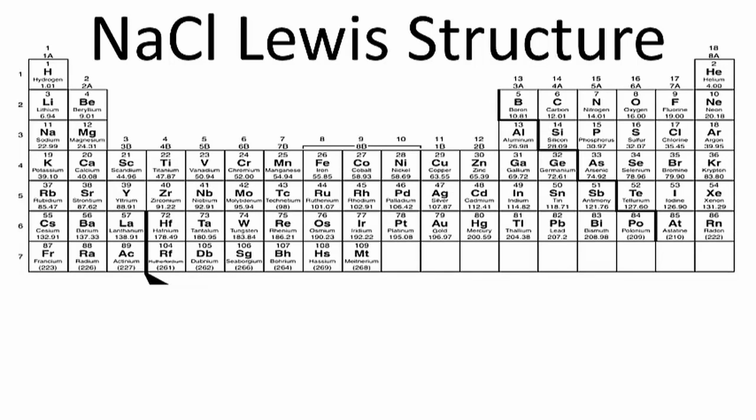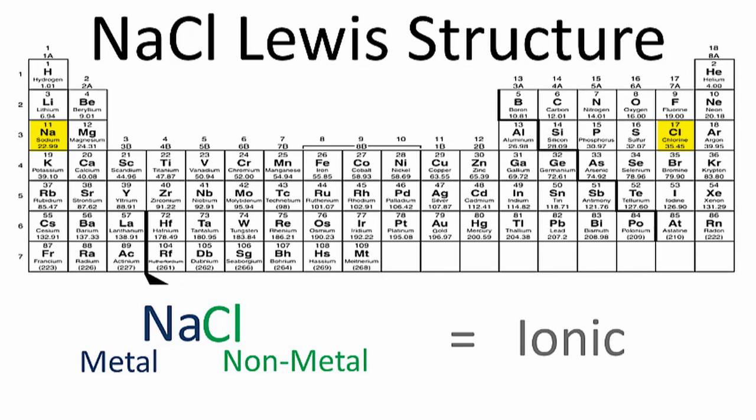In order to write the Lewis structure for NaCl, we need to realize first that sodium is a metal and chlorine is a non-metal. That means we'll have an ionic compound.